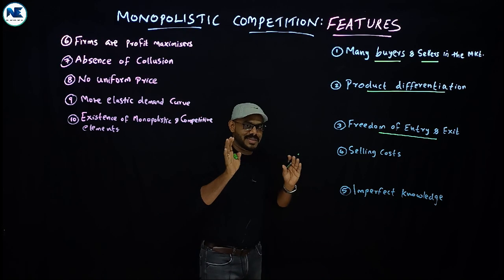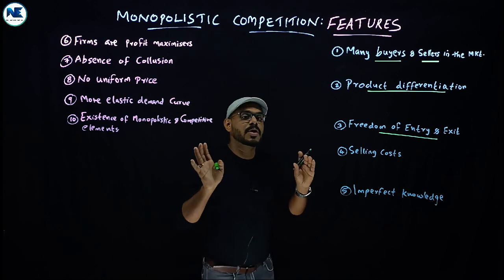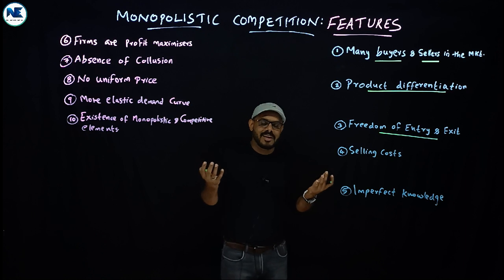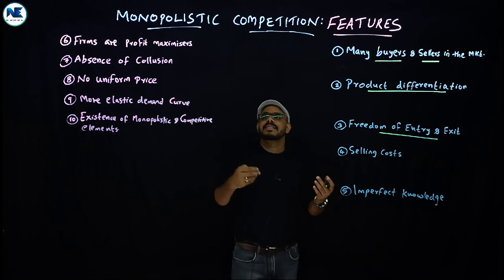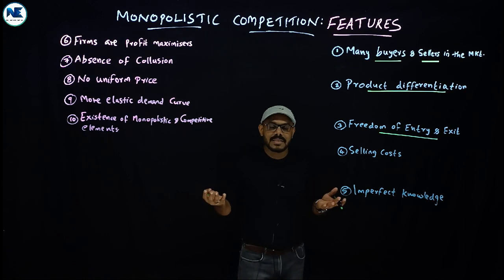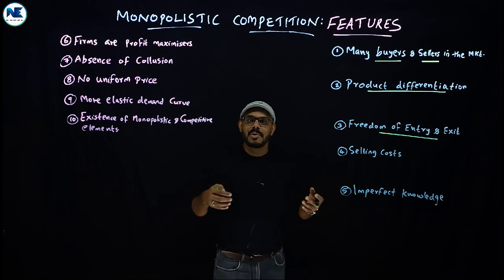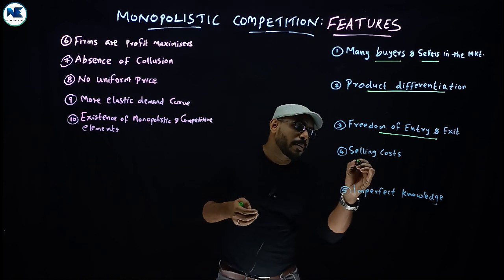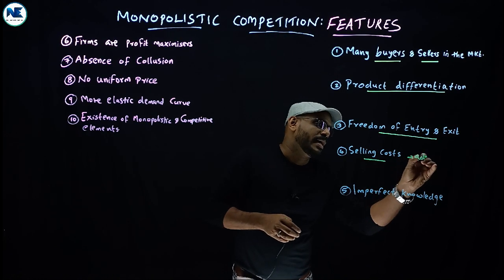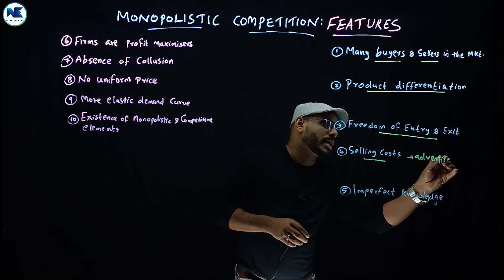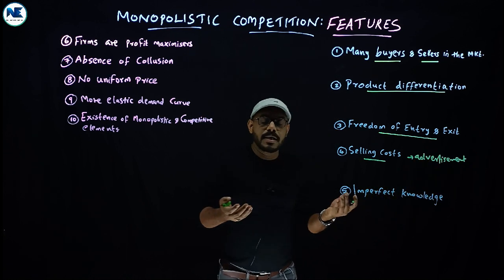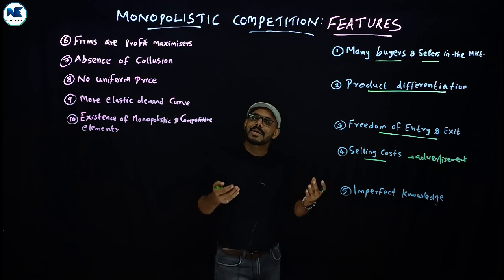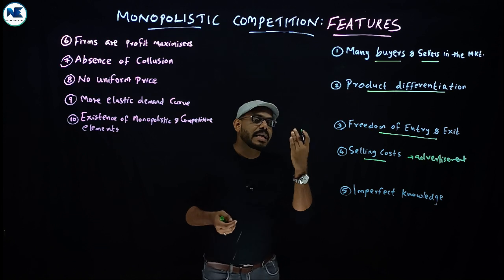The fourth point is selling cost — another very important feature of monopolistic competition. In addition to production cost, which covers factors of production like land, labor, capital, and organization, there is also selling cost. Selling cost includes advertisement, free gifts, door-to-door services, warranty, guarantees, and coupons.